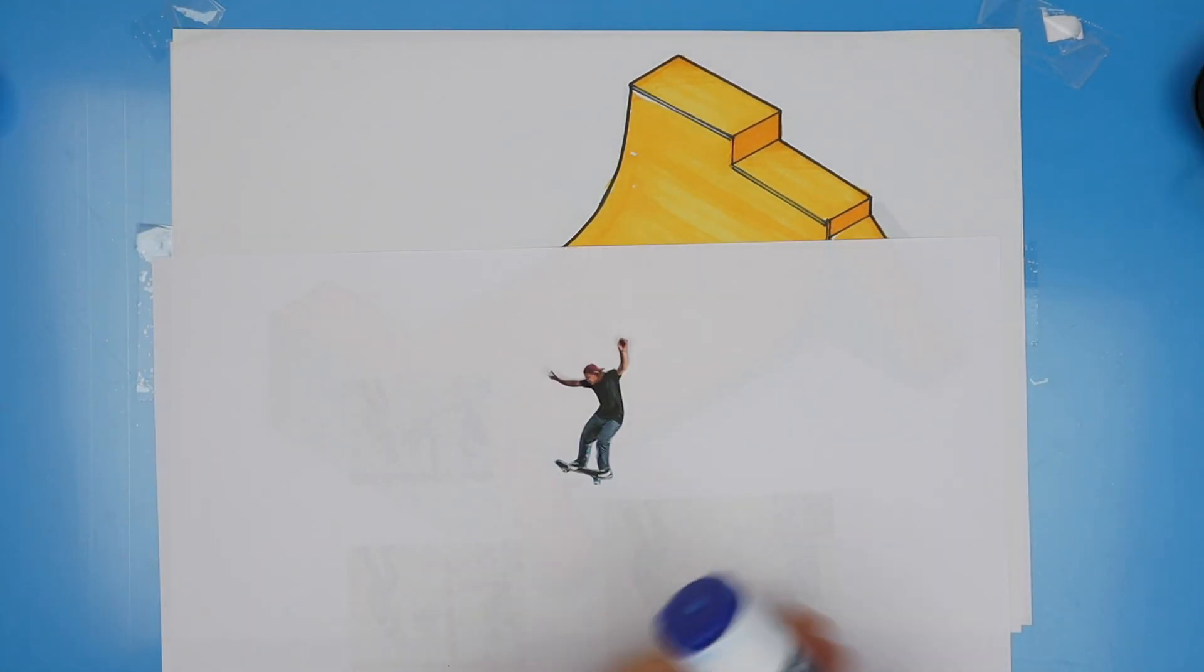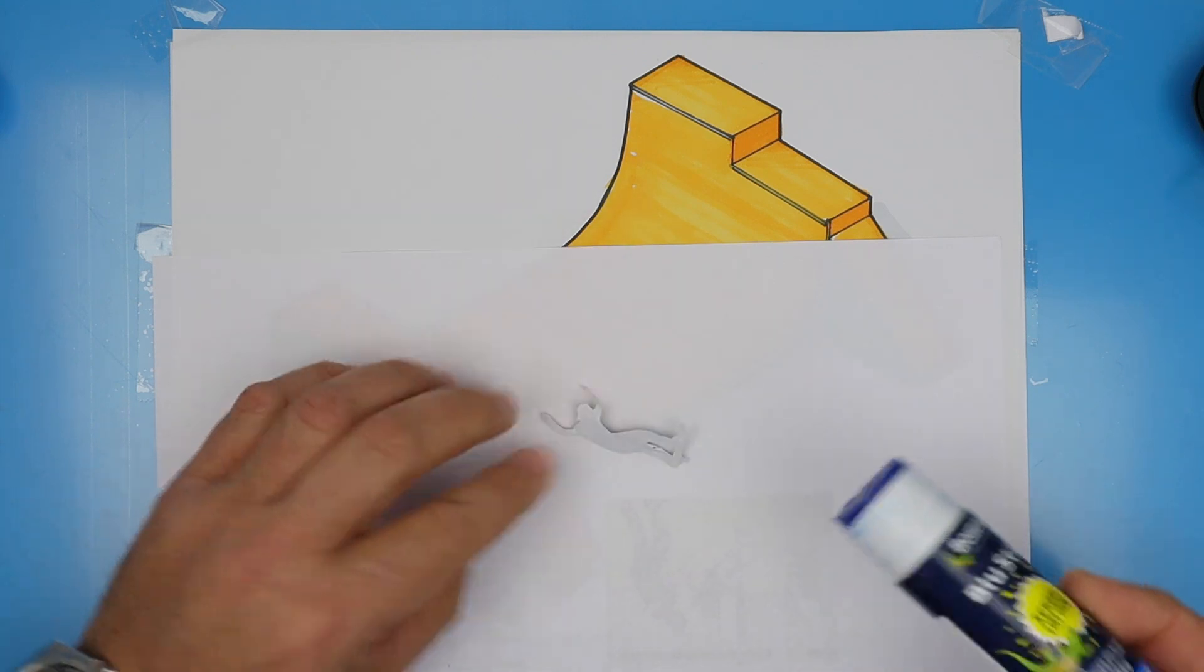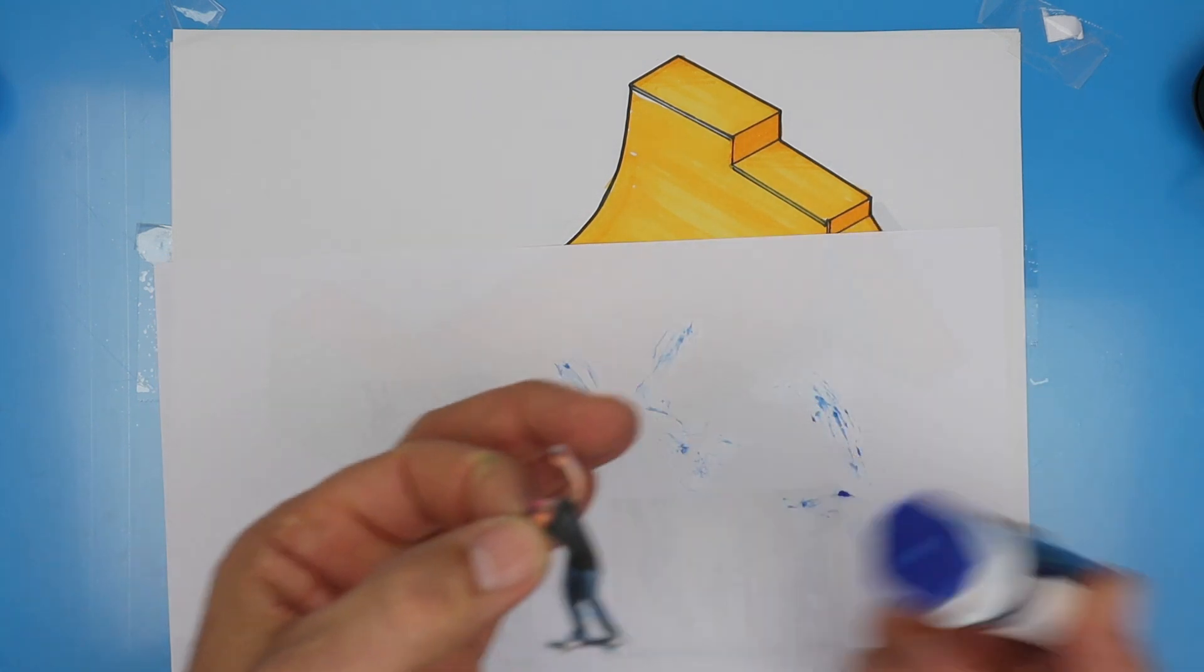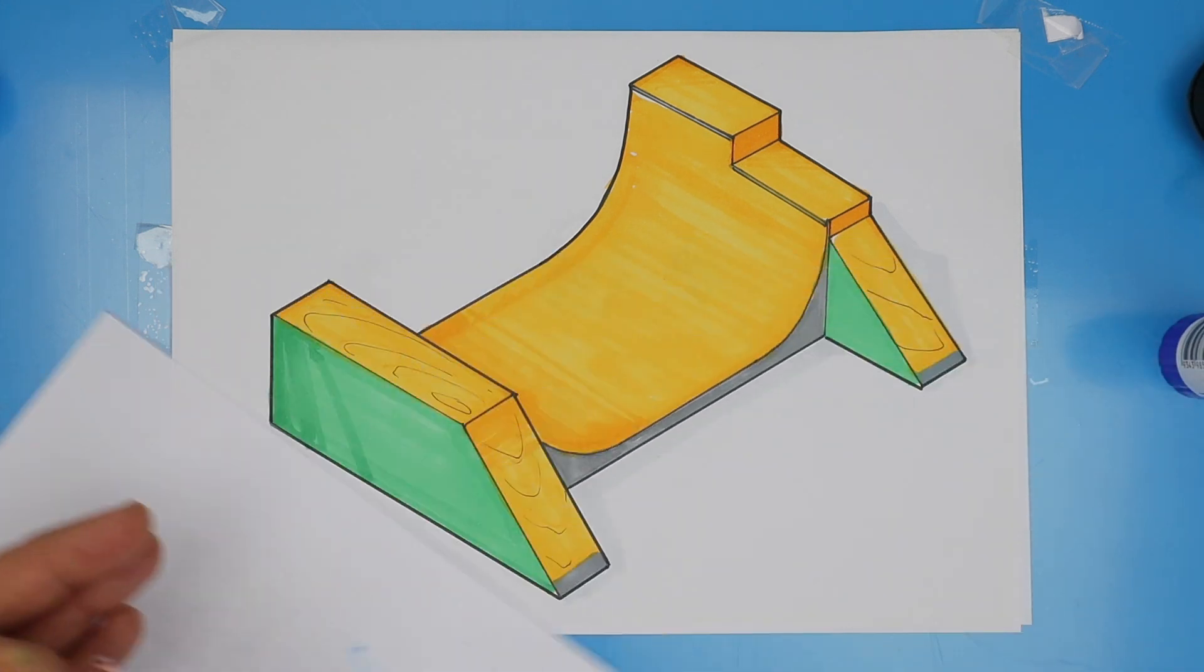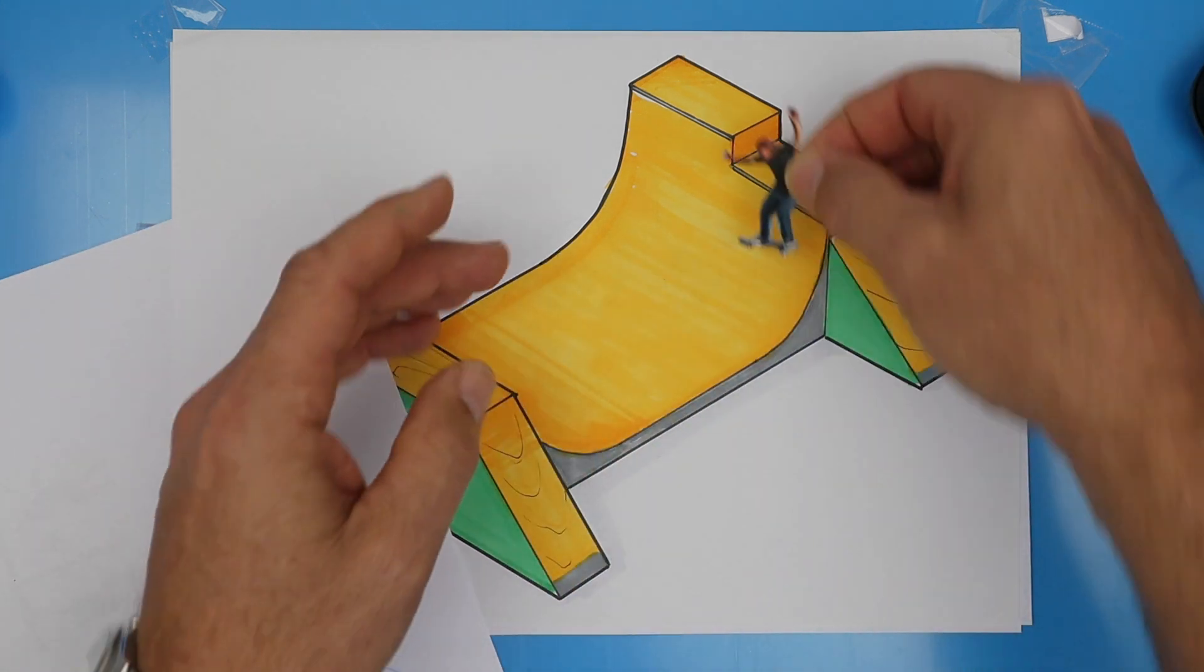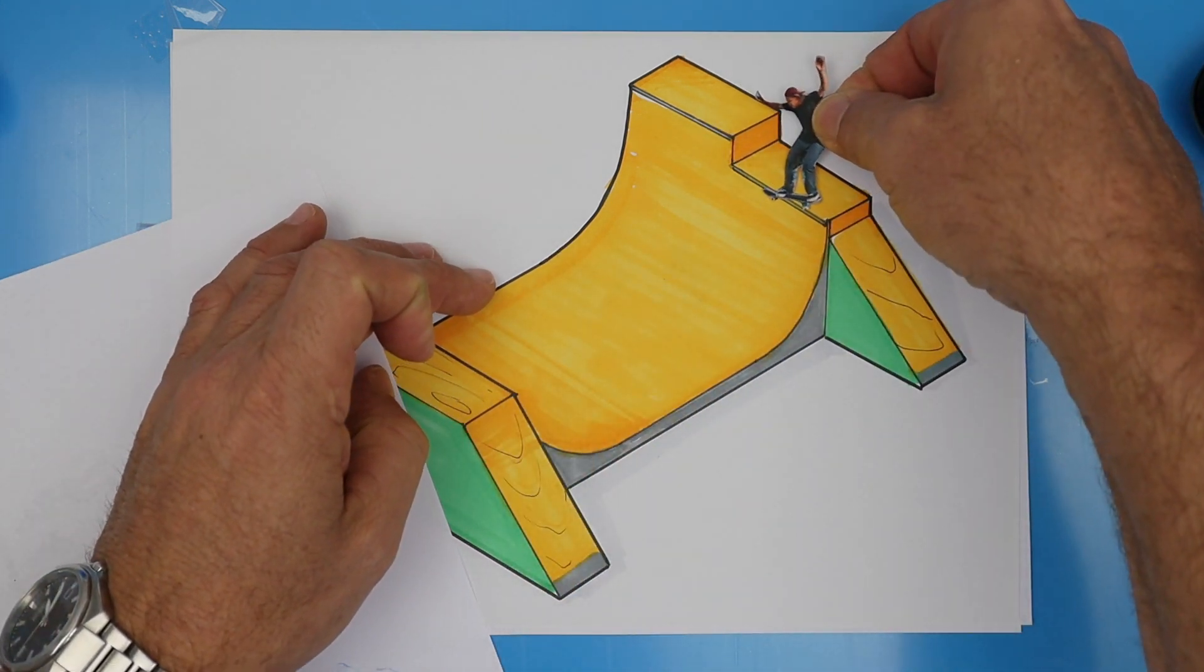If you want to, you could find some images of skaters and cut them out. Here's a picture of Chiggy. I've printed him out, cut him out, and now I'm looking to position him. So I think maybe leaning back, that looks pretty natural.